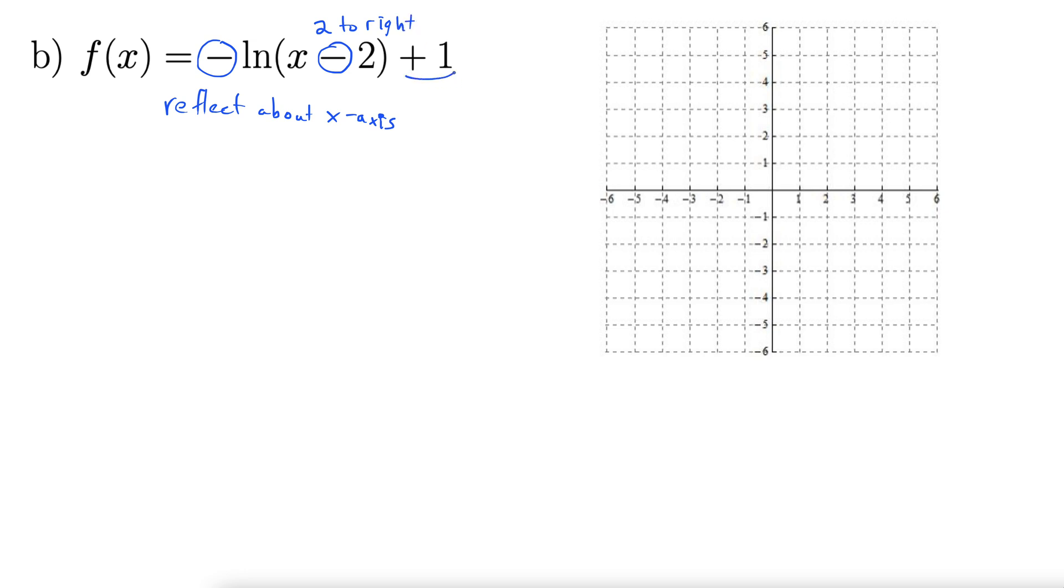And then the plus 1 outside of the parentheses, that's going to be our vertical shift. Vertical shifts go in the same direction as the sign, so this is going to go up by 1. So let's do it.